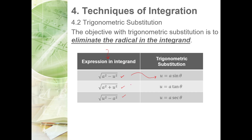Next, if you have the square root of a² plus u², we utilize u = a·tan θ. And lastly, for the square root of u² minus a², we use u = a·sec θ.